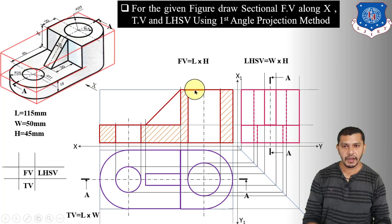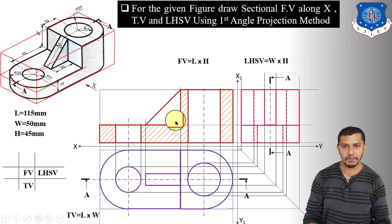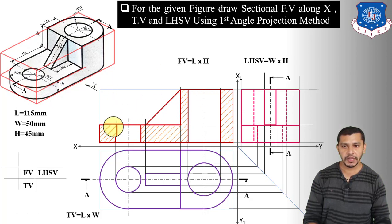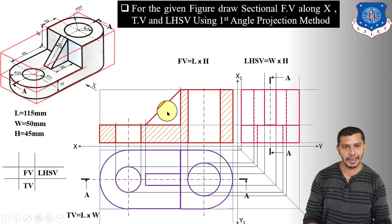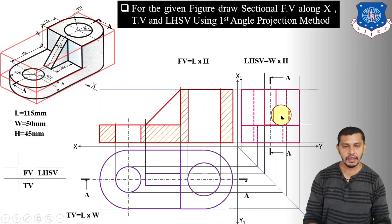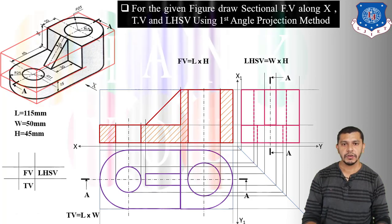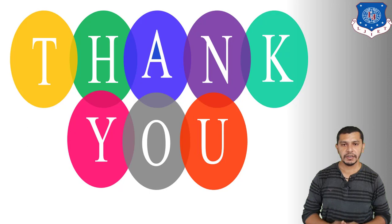We have not taken the section in the rib part because the rib is a special machine element, and as discussed in the last lecture, the rule states that we do not show the section in ribs when the cutting plane passes through the rib's axis — which is the case here. So in this part we do not show the hatching line. This gives us the final sectional front view, the top view, and the left-hand side view of the object. That's it for today — thank you for watching, see you in the next lecture, take care.